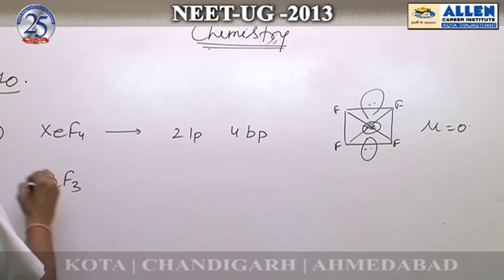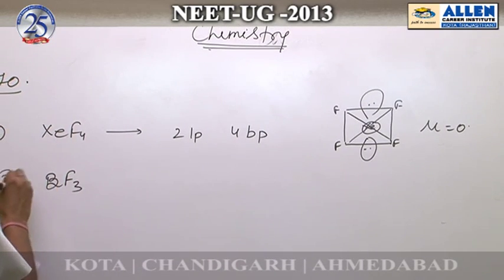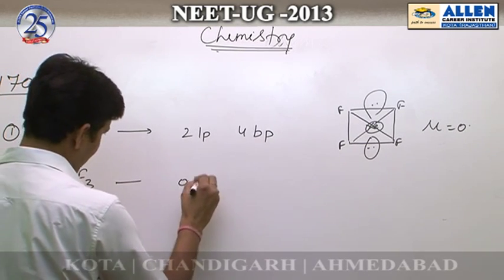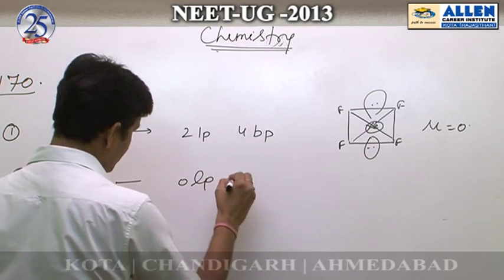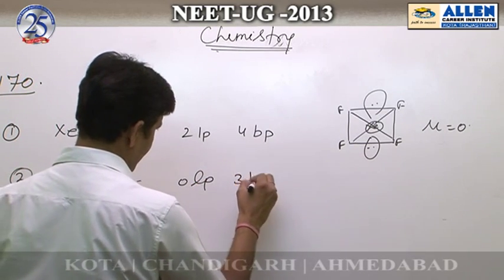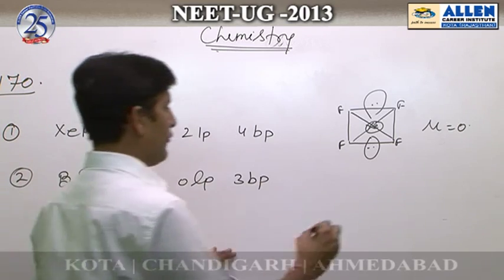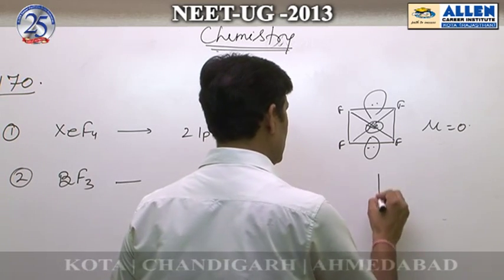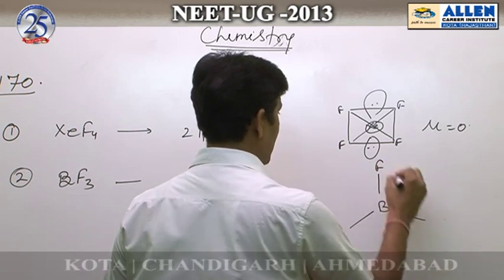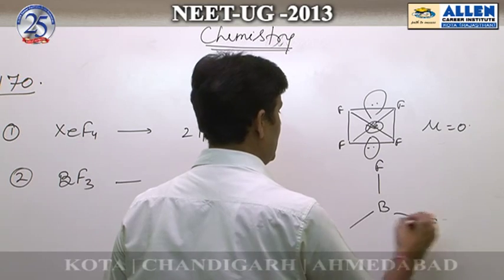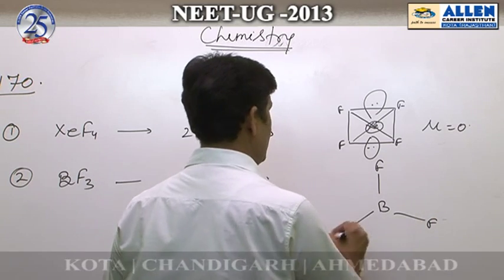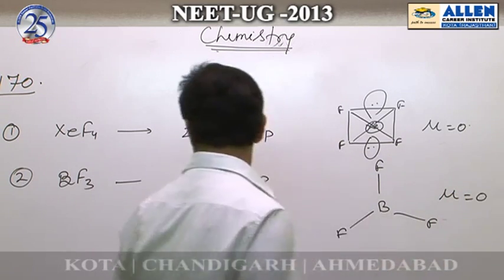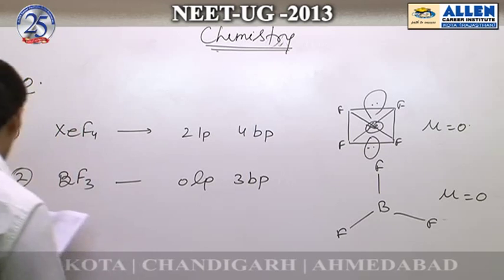Second option: BF3. It has 0 lone pairs and 3 bonding pairs. The geometry is trigonal planar and symmetrical. Therefore mu = 0, it is non-polar.